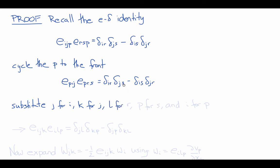l for r here, p for s here, and i for p here. So the same expression, just using different set of indices, will become eijk eilp equals delta jl delta kp minus delta jp delta kl.